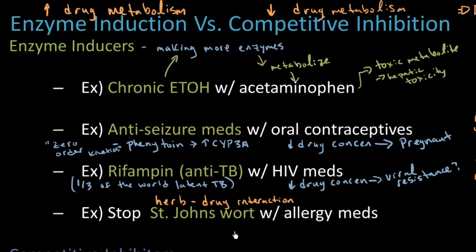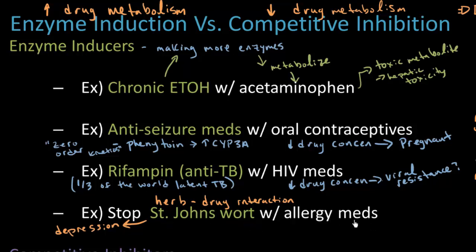This is one of the reasons doctors started asking patients whether they take any herbal or over-the-counter medications. St. John's Wort is used for depression. If I was using St. John's Wort with allergy medication, that would decrease the drug concentration. But now imagine I've been taking St. John's Wort for a while and also taking allergy medication. My doctor says there are interactions and I should stop the St. John's Wort. If I stop it, instead of having a decreased drug concentration, the drug concentration might actually increase.